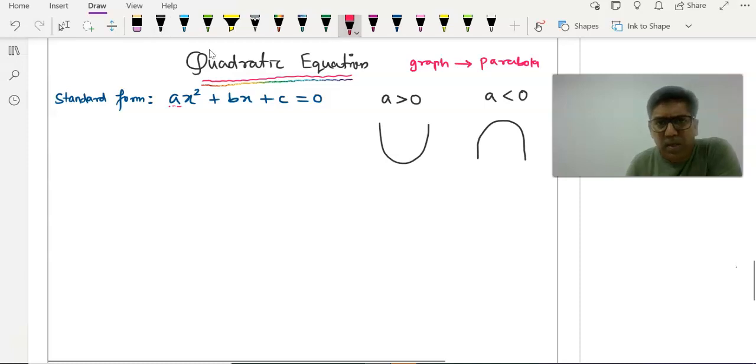Every parabola has a turning point, and we denote it with the letters h,k where h and k are the coordinates of the turning point.